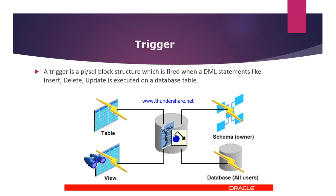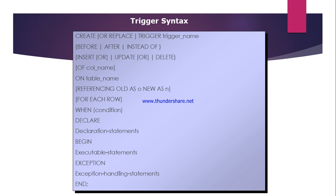When creating a trigger on a schema or database using DML or database operation statements, this is called a system-level trigger. Totally, we have 14 types of triggers in Oracle database: before row level, after row level, before statement level, after statement level, before delete, after delete, before update, after update, before insert, after insert, and instead of trigger.